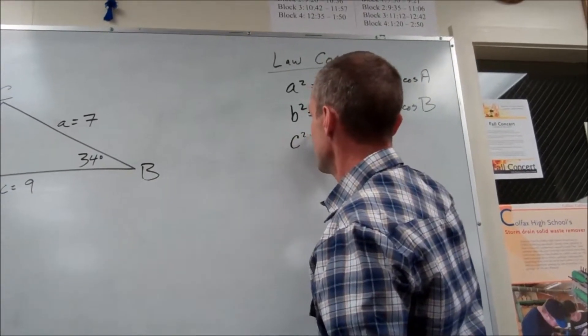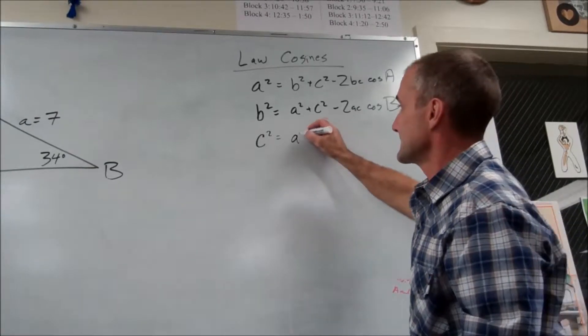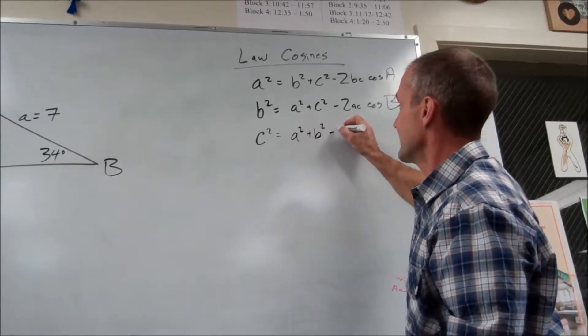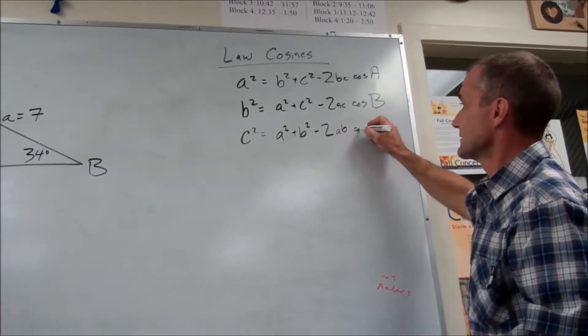So there's a third way to write this equation. So C squared is equal to what? What do you think?